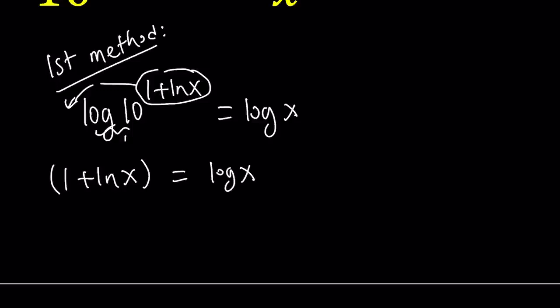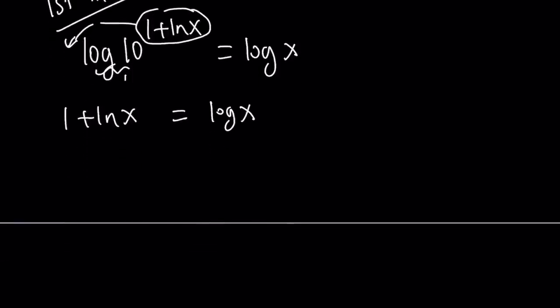I don't actually need parentheses, so let's go ahead and remove them. Now, how do you solve this equation? There's a few different ways to go about it. First of all, I'm going to put the variables on the same side. So write it as log x minus ln x equals 1.